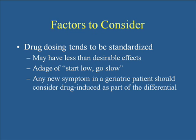Drug dosing tends to be standardized with set doses for various disease states. If you use a standard dose for a 50-year-old, a frail 85-year-old may have adverse effects. The adage of start low and go slow applies to geriatric patients and always will. Also, any new symptom in a geriatric patient should include drug-induced causes as part of the differential — never forget to look at the medication list to see if a drug might be causing new symptoms.